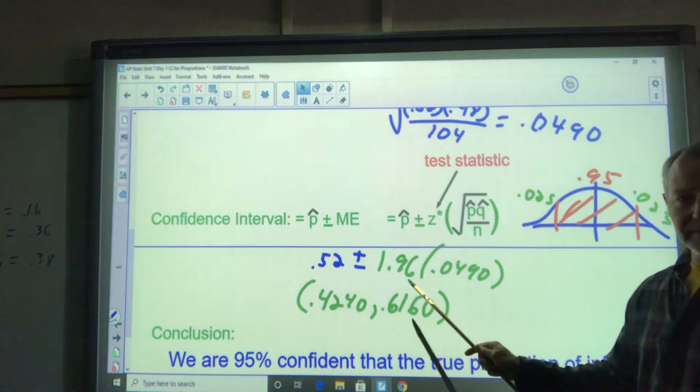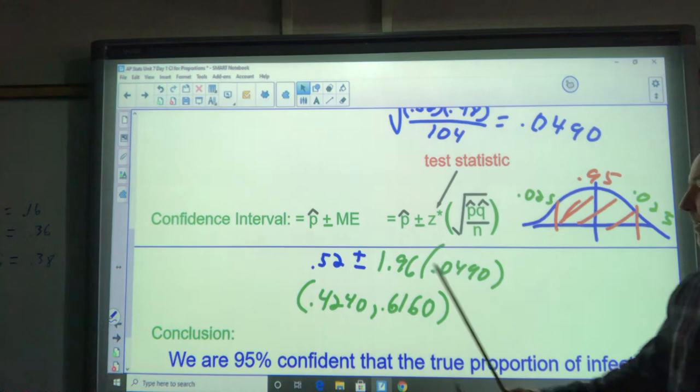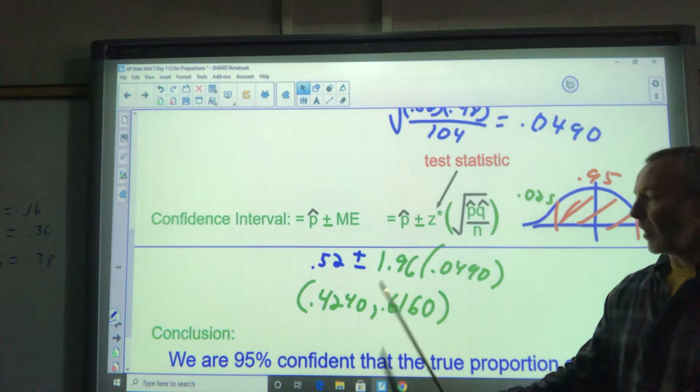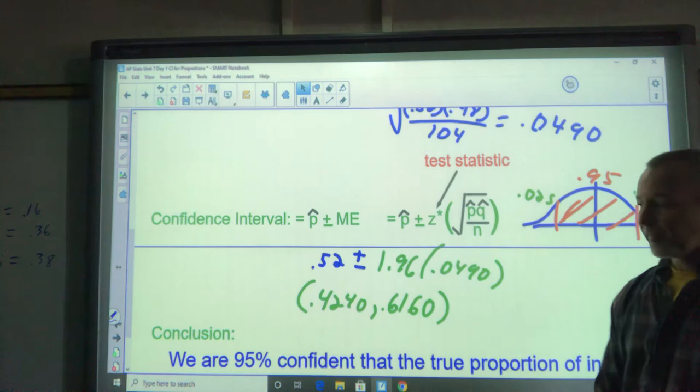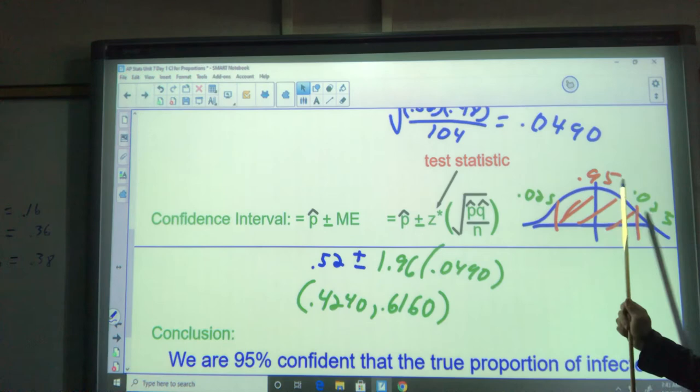Notice we're doing plus or minus, so having a negative there makes no difference. That's my Z value. Multiplied by the standard deviation, that will give us our interval. 0.52 plus those two multiplied together is here. And 0.52 minus that is going to give me this value there. This is how I write my interval. That's it right there.